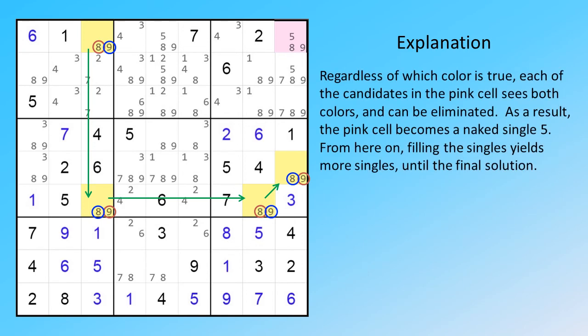Regardless of which color is true, each of the candidates in the pink cell sees both colors and can be eliminated. As a result, the pink cell becomes a naked single five. From here on, filling the singles yields more singles, until the final solution.